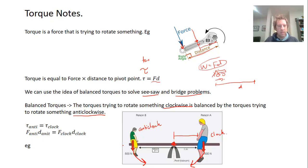This is balanced because the torques cancel out. The anti-clockwise torque, force times distance, is person B, and the clockwise torque is person A. They balance each other out.